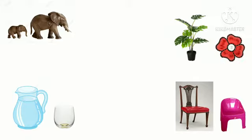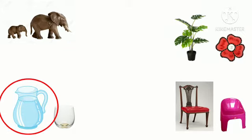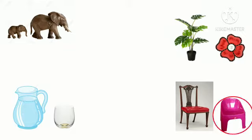Now see here — there is a big jar and a small glass. Circle the big jar. Now big chair and a small chair. What will you do now? Circle the small chair.